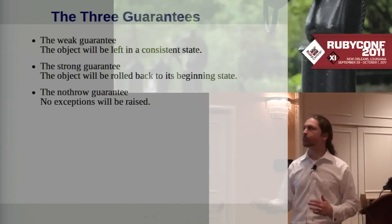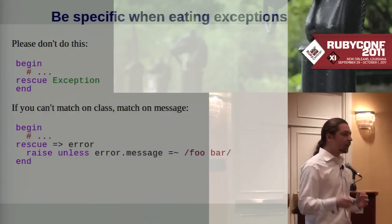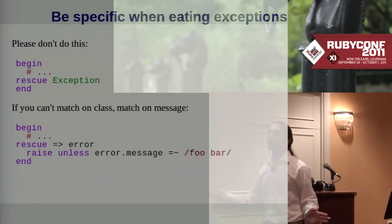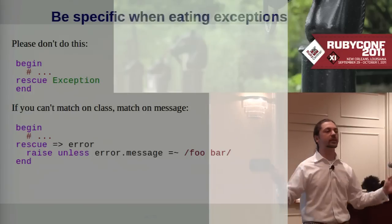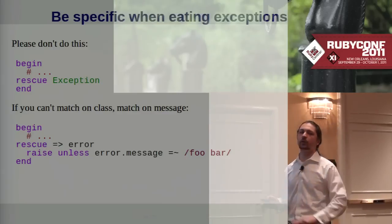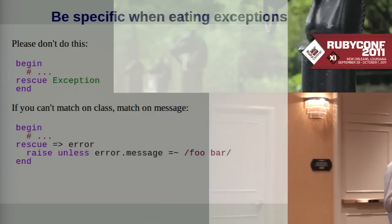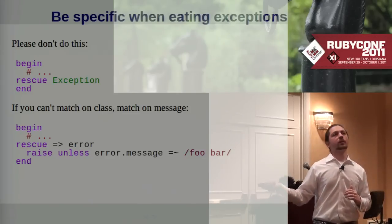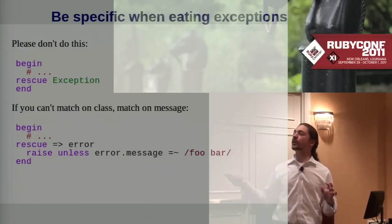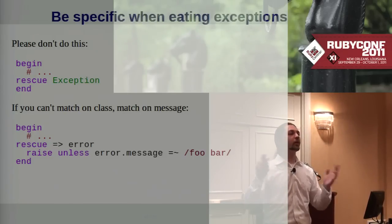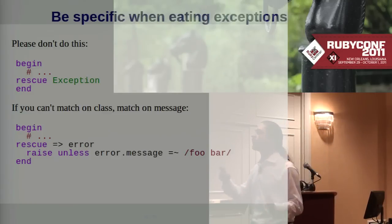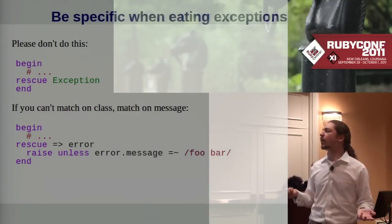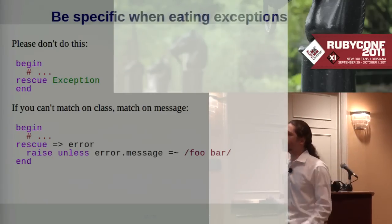Here's an anti-pattern: sometimes you encounter library code that raises all kinds of exceptions with no rhyme or reason, and you wind up wrapping it in rescue Exception and throwing every exception away. Unfortunately, this is a huge source of bugs. I can't tell you how many times I've debugged situations where the reason things weren't working right was because they threw away all exceptions. If, because of the way the code is written, you can't rely on any particular exception class being raised, at the very least try to match on the error message to limit some of those surprises.